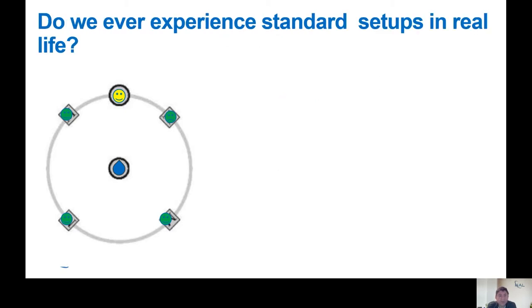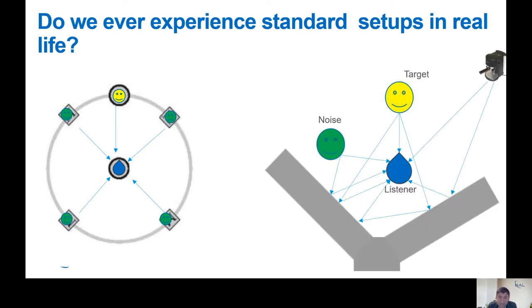We use these standard arrangements to evaluate hearing devices. The question is, do we ever experience standard setups in real life? To answer this question we need to understand the acoustic characteristics of these environments. The arrows in the figure illustrate the propagation pathway between the point source, the loudspeakers, and the listener. As you can see, they are very uniform.